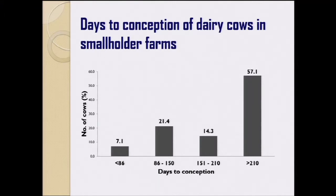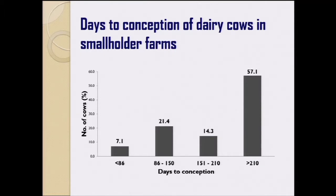The expected calving interval for the cows was more than 500 days, ranging from 366 to 867 days. This chart shows the days to conception of the dairy cows. We can see that 55% of the cows conceived after 210 days. This is a problem for small-scale farms that we need to improve.